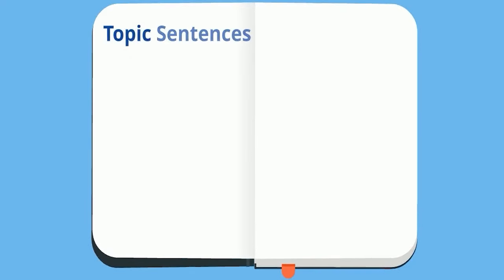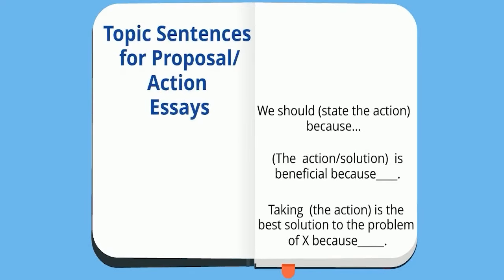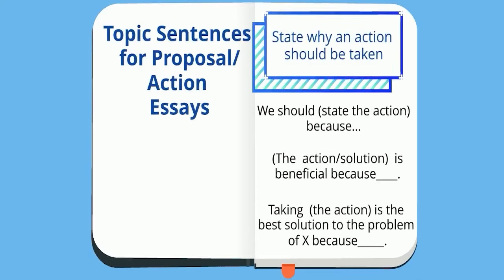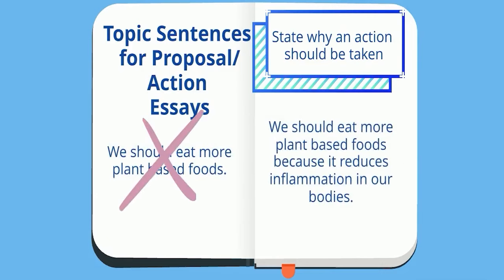Next, in a proposal essay, you're telling your readers to take a certain action, so every topic sentence needs to provide a different reason for why that action should be taken. For example: 'We should eat more plant-based foods because it reduces inflammation in our bodies.'